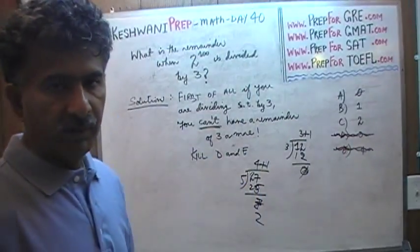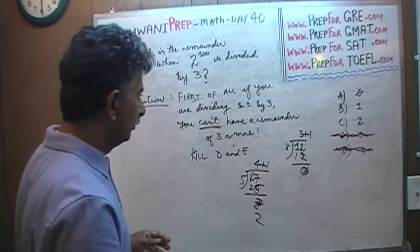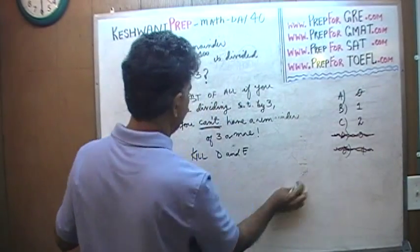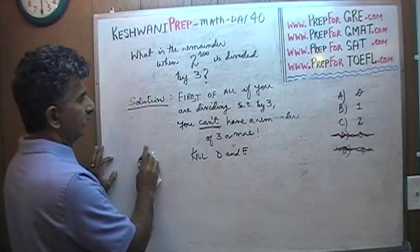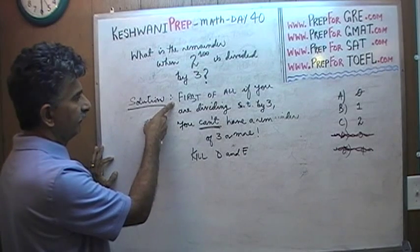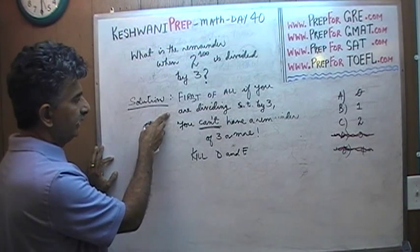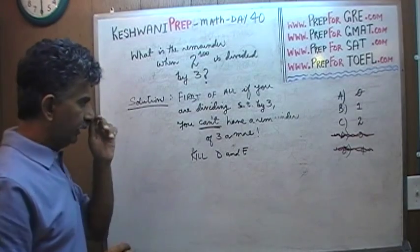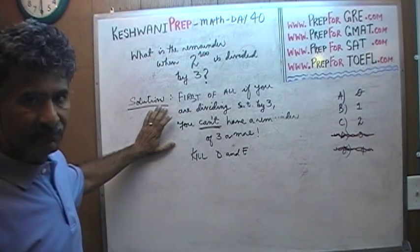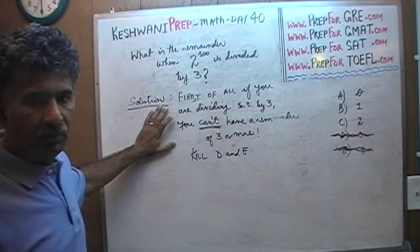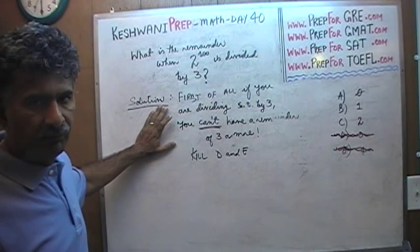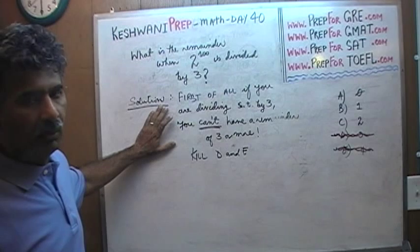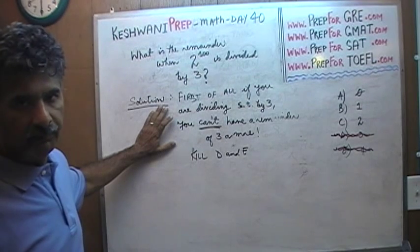So the correct answer, whatever it is, has to be either 0, 1, or 2. If you are dividing something by 3, you can't have a remainder of 3 or more — kill D and E. This exercise is just to train ourselves as to how to raise your odds on the exam if you really don't know what's going on, or if you don't have the time to solve the problem.